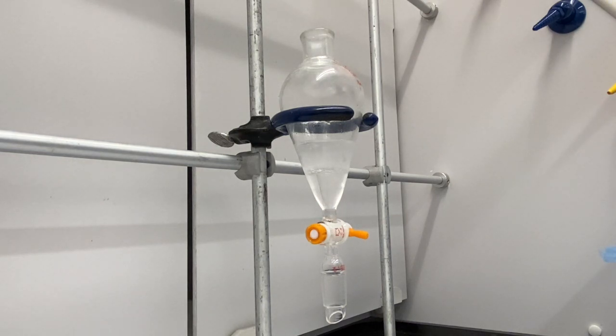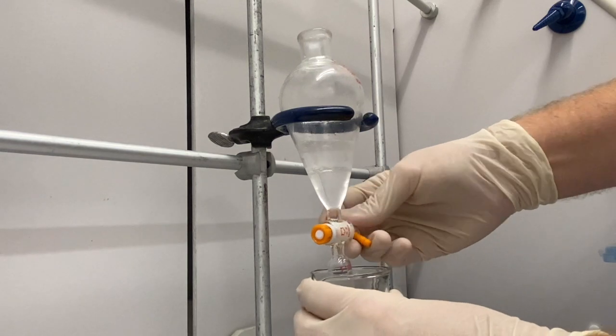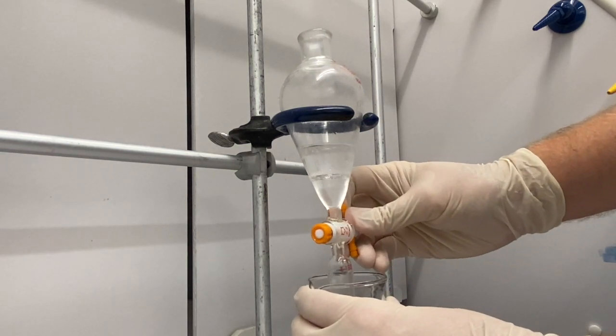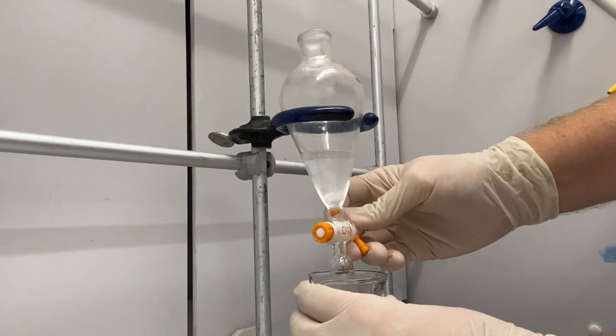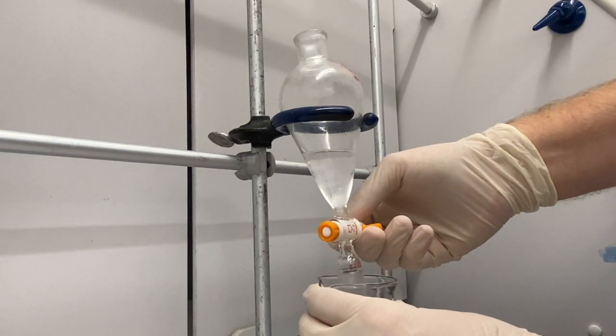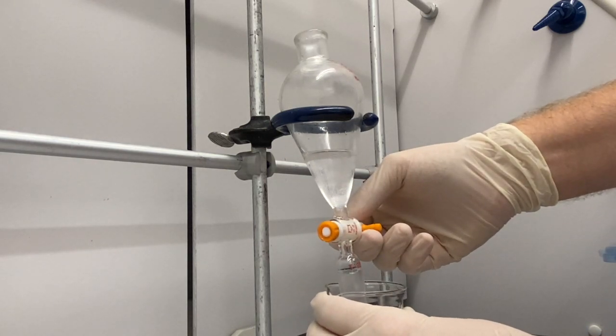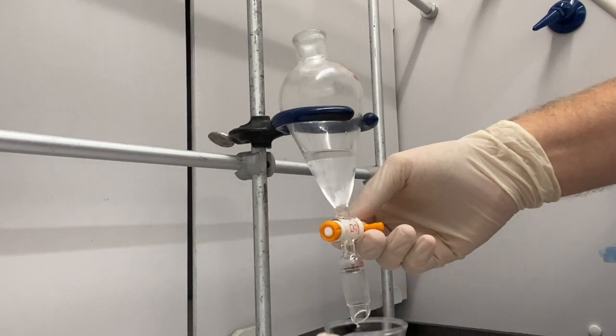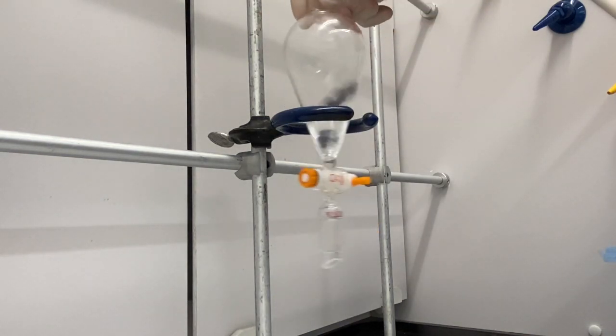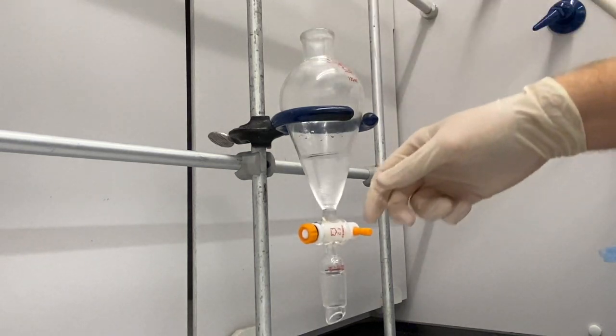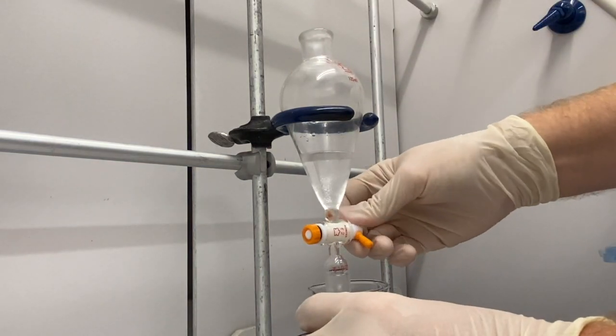Our bottom layer is our dichloromethane layer because it's more dense, so we're going to drain that out. And we want to do our best to not get any water or minimize the amount of water that we get. You can see there are bubbles falling down of more methylene chloride. Let's give that a second to settle out. We want to take the rest of that.